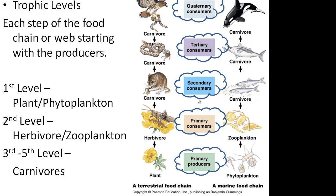In this example, our third, fourth, and fifth level are all carnivores. We have our secondary consumers, our tertiary consumers, and our quaternary consumers.